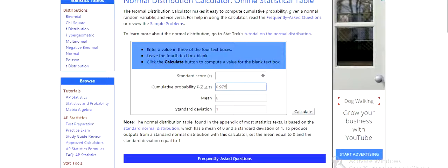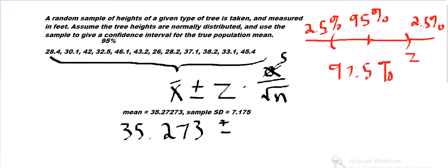Or if you're using a calculator, it's inverse normal or inv norm. That gives us Z equals 1.96.